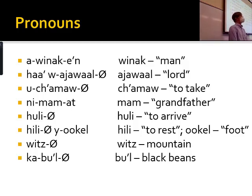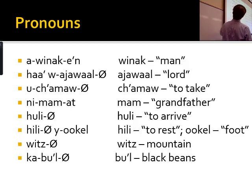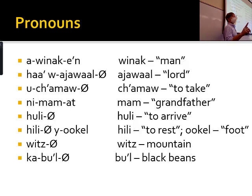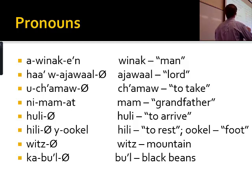'Huli' with a zero ending — he arrived, she arrived, it arrived. They arrived technically would be 'huli ob.' 'Hili yokel' — 'okel' is foot, 'hili' rests. So 'hili yokel' — his foot rests. Not 'he rests,' it's singular, third person, but it's not 'he rests' — it's his foot that rests. Verb, then subject: his foot rests, or her foot rests, or its foot rests.